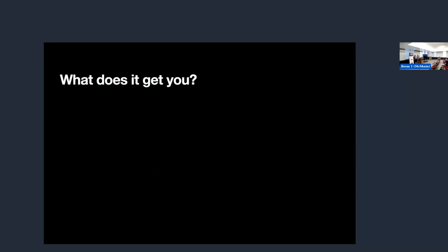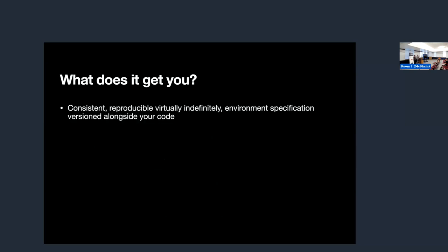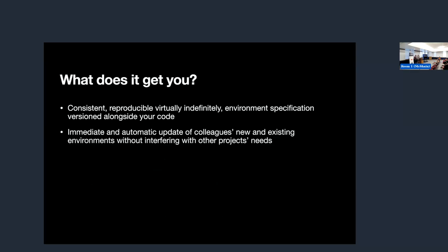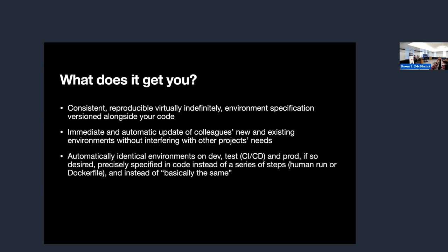In the context of what we're going to talk about today, what does it get you? It gets you consistent, reproducible, virtually indefinitely — environment specifications versioned alongside your code. Immediate and automatic update of colleagues' new and existing environments without interfering with any other project they have going on. Automatically identical environments on dev, test, prod — or just dev — specified in code instead of as a series of steps maybe in your README or worse, a Dockerfile. And extremely fast switching between project environments.